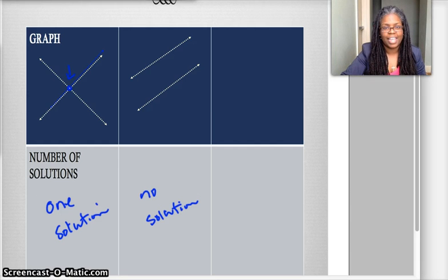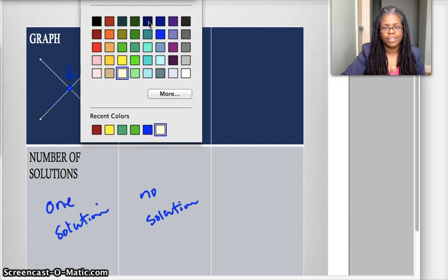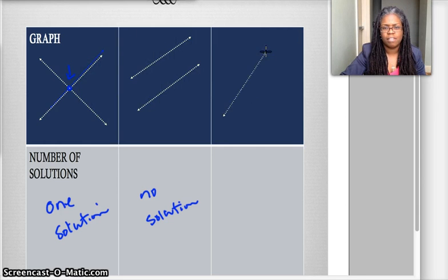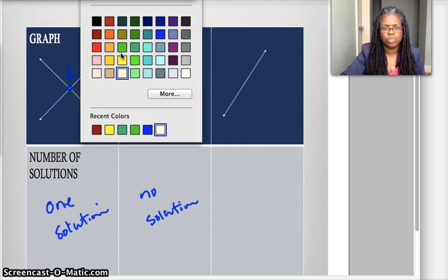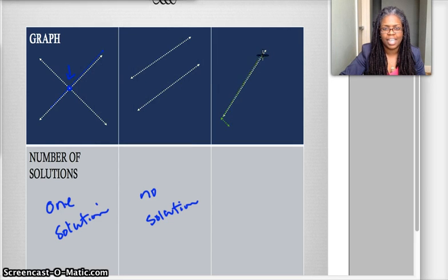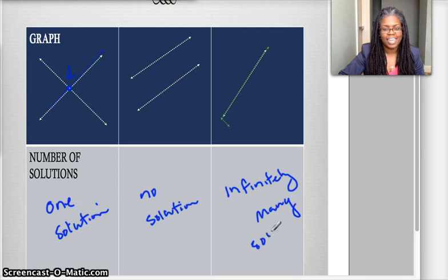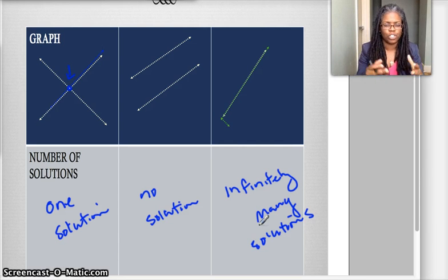When we graph our lines or if we graph our lines and we find ourselves in a situation where we get one line that happens to be exactly the same as the other line, so I've got that white line and this green line laying right on top of each other. What that is, is that there are infinitely many solutions.